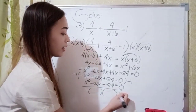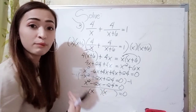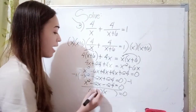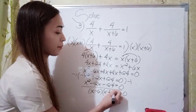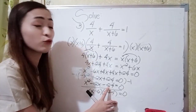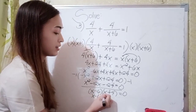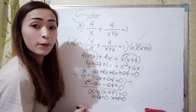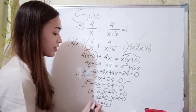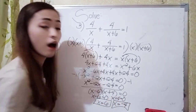Now let's find the roots by factoring x squared minus 2x minus 24 equal to 0. The factors of x squared are x times x. Think of two numbers that multiply to negative 24 and add to negative 2 — that is negative 6 and positive 4, since negative 6 times 4 is negative 24, and negative 6 plus 4 is negative 2. So: x minus 6 equal to 0 gives x equals positive 6 (first solution), and x plus 4 equal to 0 gives x equals negative 4 (second solution).